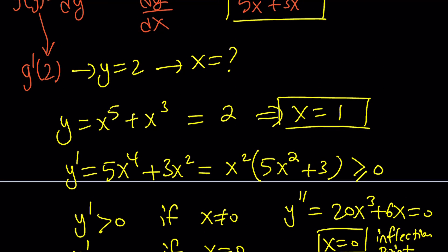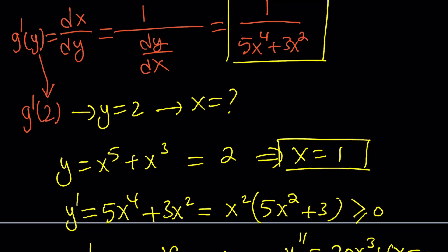So x = 1 seems to be the only solution in this case because our function is always increasing. So what do we do with that? We replace x with 1. If you evaluate this expression for x = 1, that gives you 1/(5 + 3) = 1/8. So g'(2) is going to be 1/8.